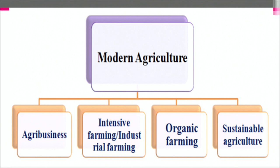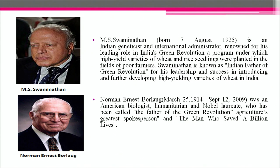Now, come to green revolution. Green revolution means a large increase in food production in developed and developing countries achieved by using modern agricultural techniques. M.S. Swaminathan, an Indian geneticist and international administrator, is renowned for his leading role in India's green revolution — a program under which high yield varieties of wheat and rice seedlings were planted in the fields of poor farmers. Norman Ernest Borlaug was an American biologist, humanitarian and Nobel laureate who has been called the father of the green revolution and the man who saved a billion lives.